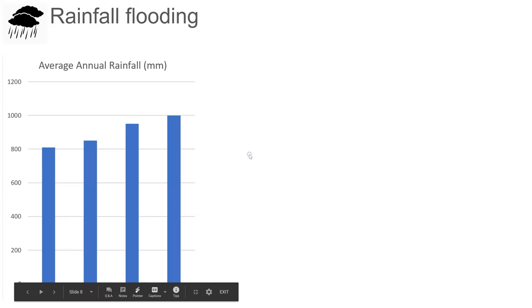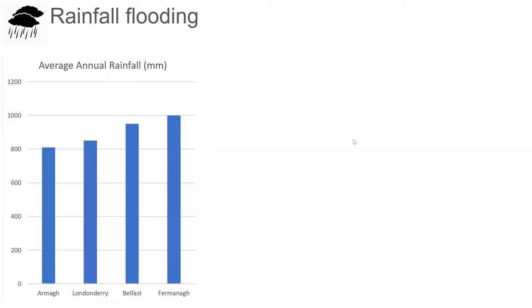Northern Ireland is a pretty rainy place. What would the average annual rainfall for Northern Ireland be in millimeters? Here is a chart showing rainfall for some areas around Northern Ireland. Down at the bottom right, Fermanagh in the west gets up to around 1,000 millimeters of rain. Coming over to Armagh, it's closer to 800 millimeters.